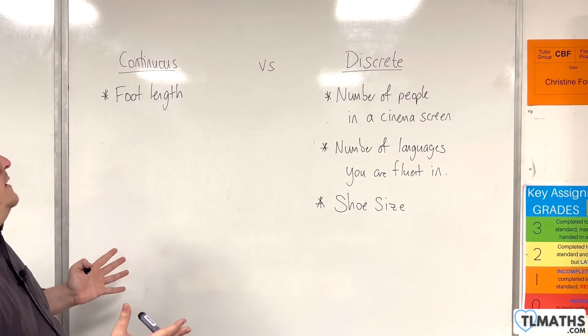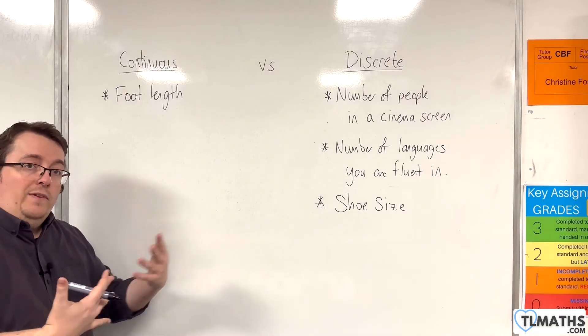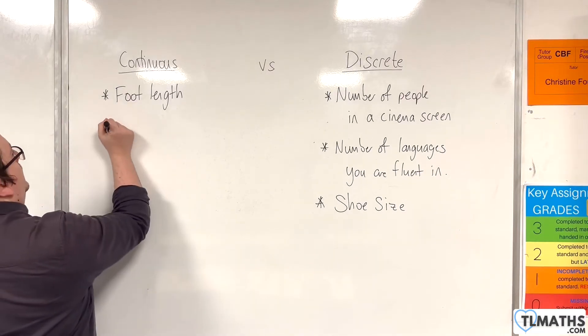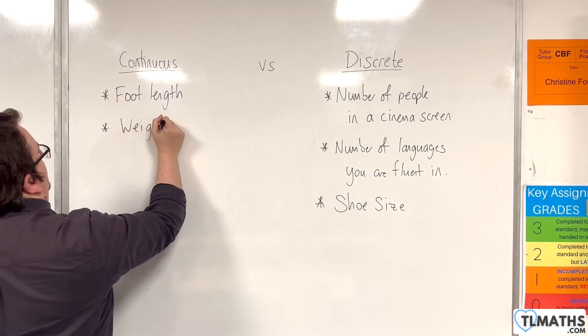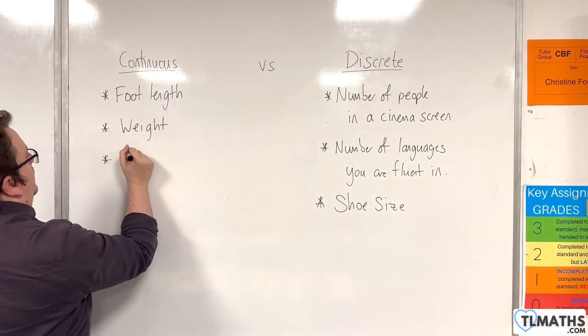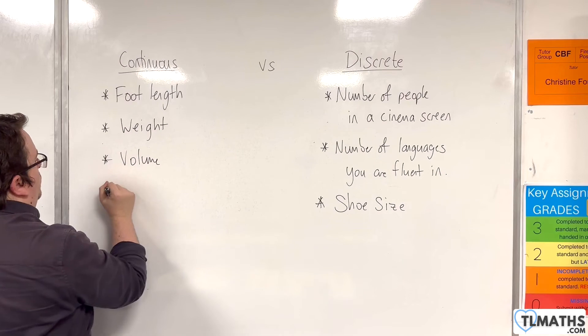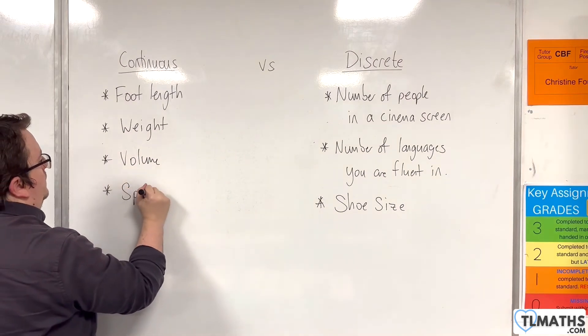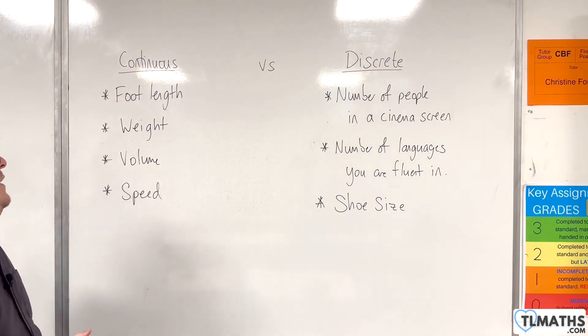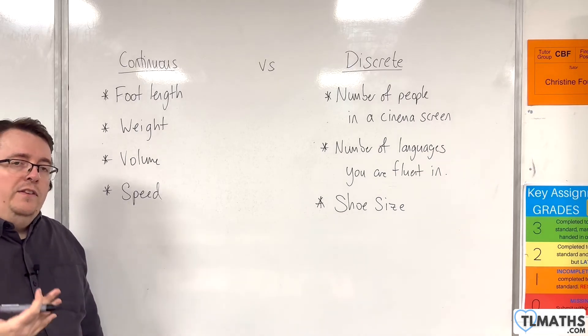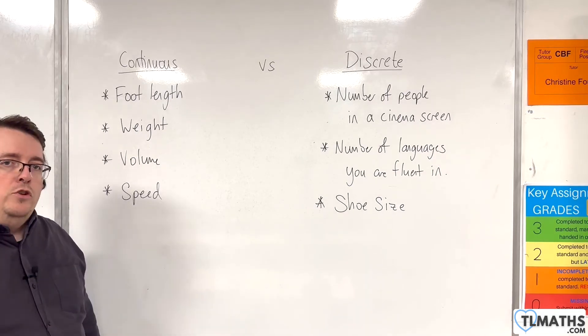Now alongside foot length or any kind of length really would be things like weight or volume or speed. These things would also be considered as continuous because they are things that can be measured.